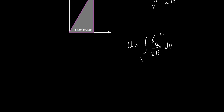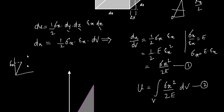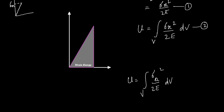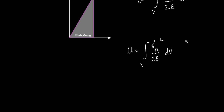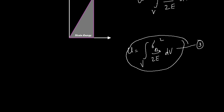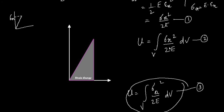If you apply the elastic limit stress and calculate the internal energy, that gives the modulus of resilience of the material — which is the ability of the material to store or absorb energy without permanent deformation. The only difference from the general internal energy equation is that you substitute the stress at the elastic limit.